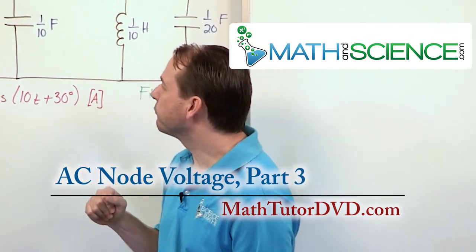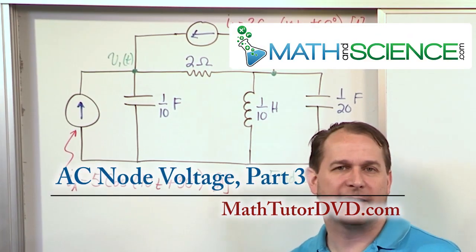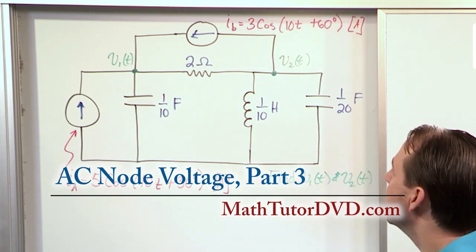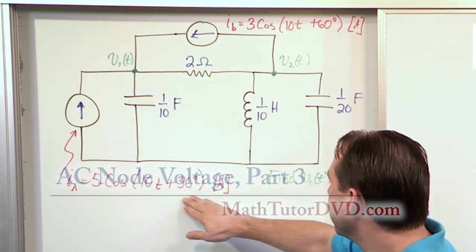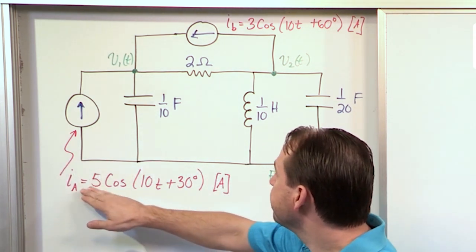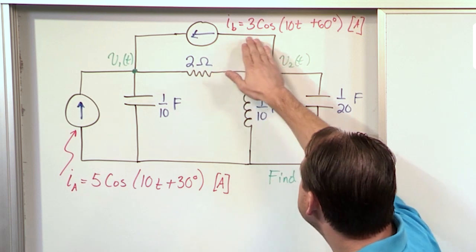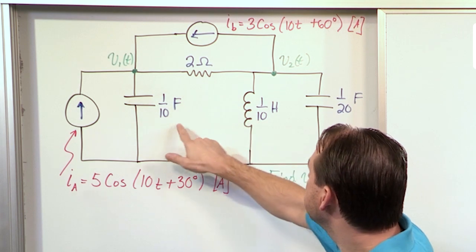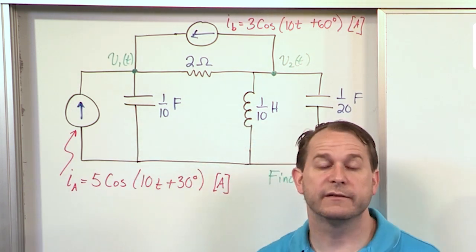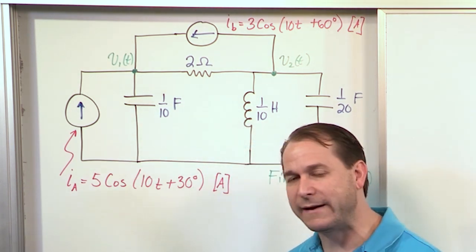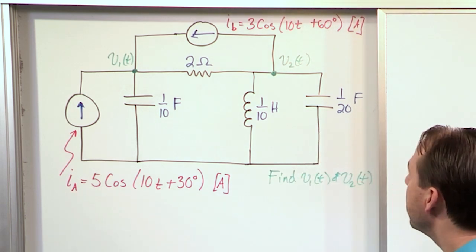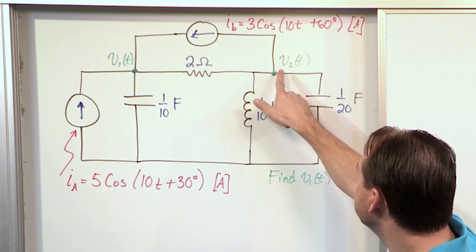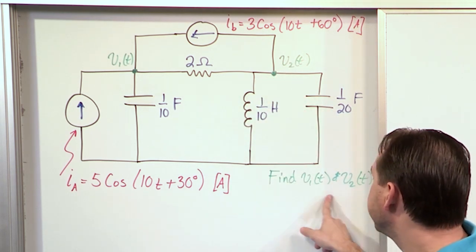In this lesson, we're going to solve this node voltage problem. It's a little more complicated than the last one we did, but it's not so complicated to bog you down too much. We have a current source given as a full-blown function of time in amps, another current source up here also given in amps, and then a capacitor, inductor, and resistance whose capacitance and inductance values are given in their units, so we have to calculate the impedance. We're given a voltage at one node and a voltage at another connection, and we're asked to find these voltages as functions of time.